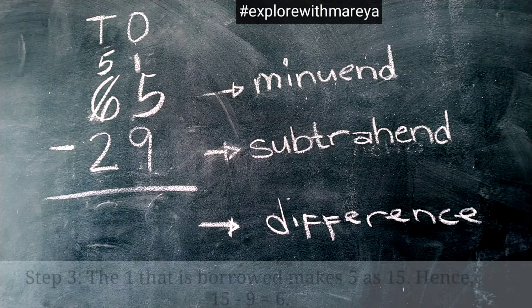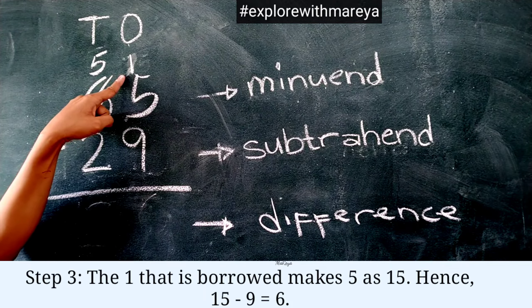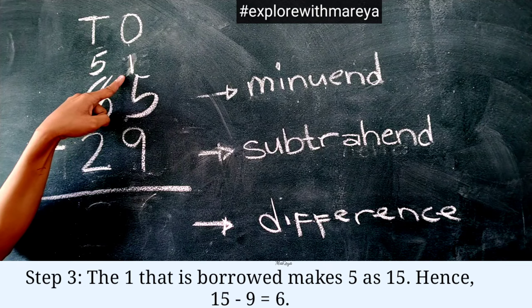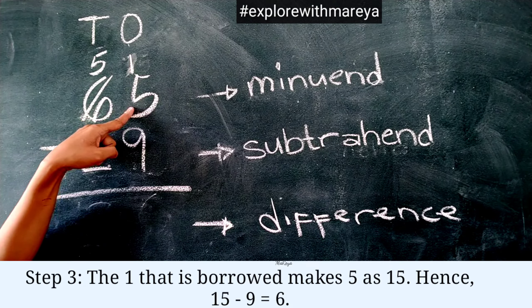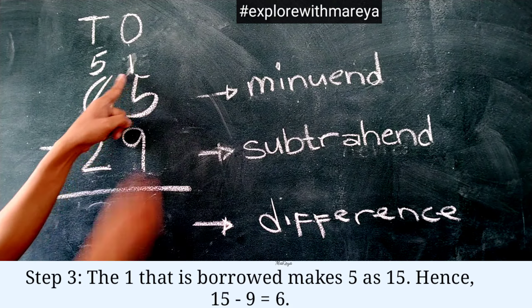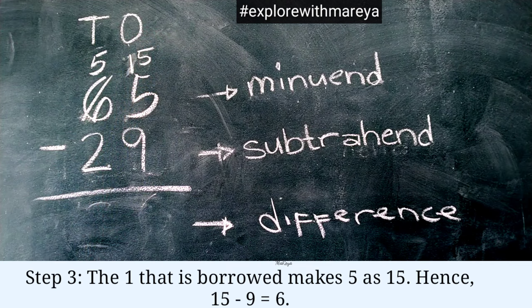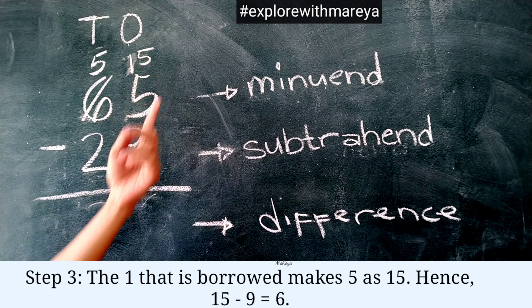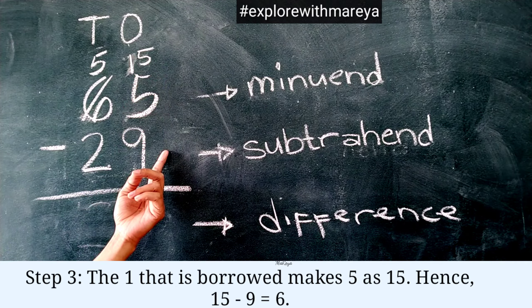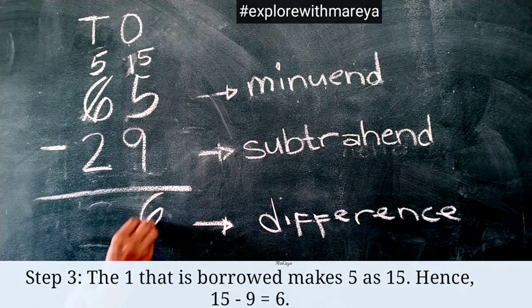Step 3: The 1 that is borrowed makes 5 become 15. Hence, 15 minus 9 equals 6.